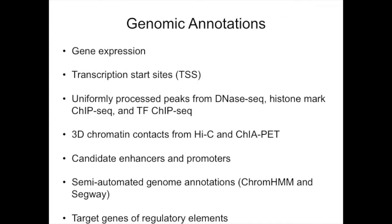This is a list of different genomic annotations that you can look at, and it certainly isn't an entire list. Some are quite simple in that they only require one type of experiment or assay, such as gene expression or processed peaks from DNase-seq or ChIP-seq. But then you have more complicated annotations that require you to merge and combine different data sets — for example, if you want to annotate regions of the genome like ChromeHMM does, or perhaps predict target regions of regulatory elements.